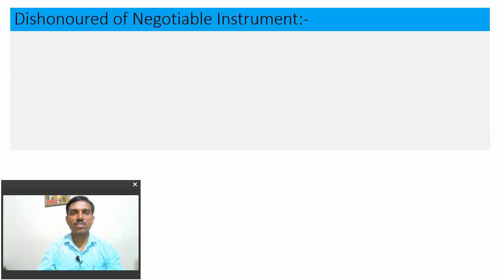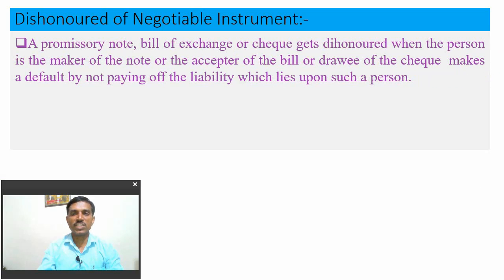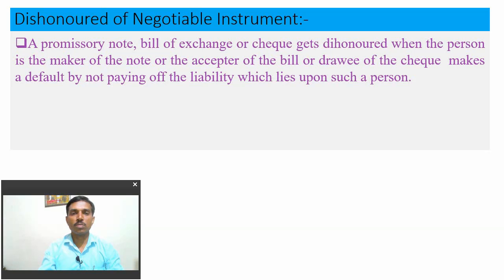The various negotiable instruments used in practice include the Promissory Note, Bill of Exchange, and Cheque. Dishonor of a Negotiable Instrument means the Promissory Note, Bill of Exchange, or Cheque gets dishonored when the maker of the note, acceptor of the bill, or drawee of the cheque makes a default by not paying the liability which lies upon such a person — for example, due to insufficient balance in the account.